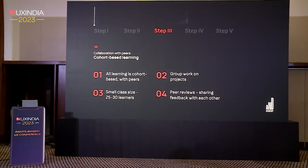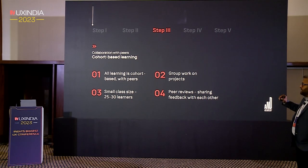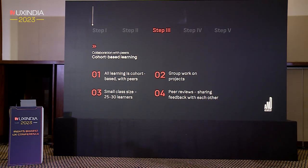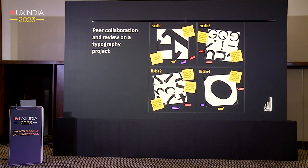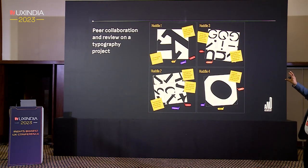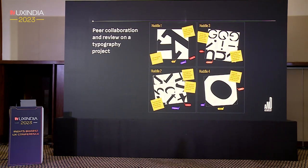Peers work on projects together and give feedback to each other using an online pin-up board accessible to both peers and mentors, enabling 360-degree feedback. Cohort sizes are kept relatively small — 25 to 30 learners. Here's an example of peer collaboration and review on a graphic design project: post-its were pasted on the work digitally to share feedback — for instance, 'I have one suggestion: you can try cutting the letter O in half to play with it.'